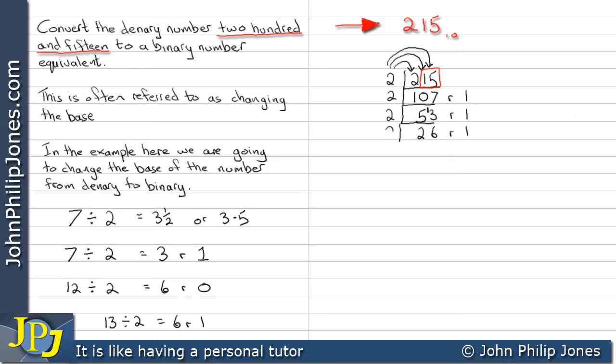And then we say, well how many twos go into thirteen? Six with one remaining. Then how many twos go into twenty-six? Thirteen with no remainders this time. Two into thirteen goes six with a remainder of one. Two into six will go three times with a remainder of zero. Two into three will go once with a remainder of one.